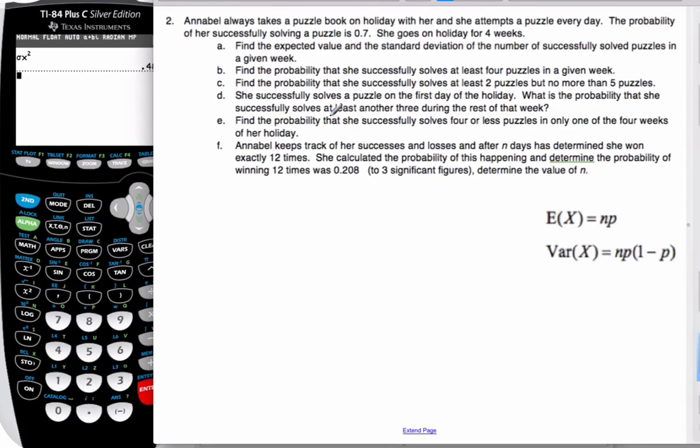Okay, so we have a problem here. Annabelle takes a puzzle book on holiday. She attempts it every day. The probability of successfully solving is 0.7. She goes on holiday for four weeks. We want to find the expected value and the standard deviation of the successfully solved puzzles in a given week.